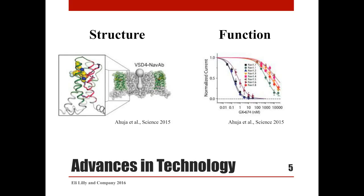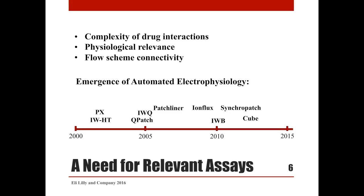To correctly interpret structure-activity relationships and guide compound optimization, functional data are also needed. The selectivity profile for this arylsulfonamide is shown on the right; the data were obtained with manual patch recording where special care was devoted to maintaining the sodium channel isotype in equivalent conformational state. The complexity of ion channel drug interaction and the need for physiological relevance require assays with substantial throughput and good control of ion channel conformation to assure predictive value for downstream in vivo endpoints.